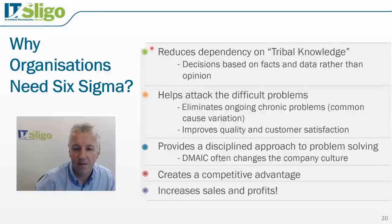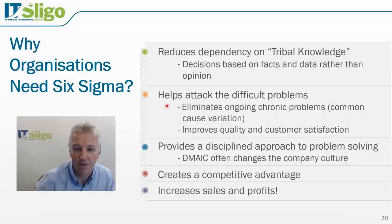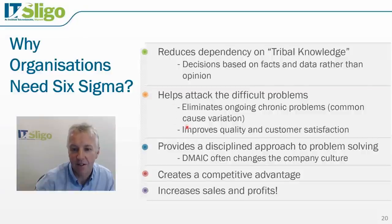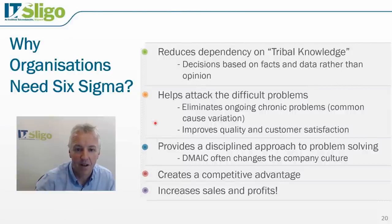To finish up this section: why do organizations need Six Sigma? When you base decisions on facts and data rather than just opinion, you reduce the dependency on tribal knowledge and become a data-driven organization. Six Sigma also helps attack difficult, chronic problems — common cause variation — where it isn't always apparent where the solution lies. The structured DMAIC process helps identify solutions, ultimately improving quality and customer satisfaction. This disciplined approach to problem solving often changes company culture, and by improving quality and customer satisfaction, you gain a competitive advantage through increased sales and profits. In future lectures, we'll look at Lean.